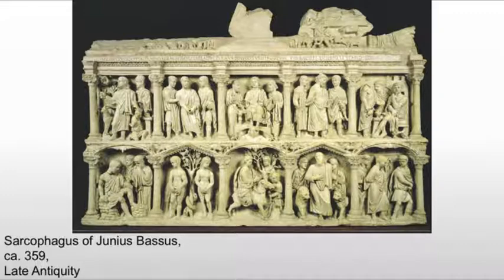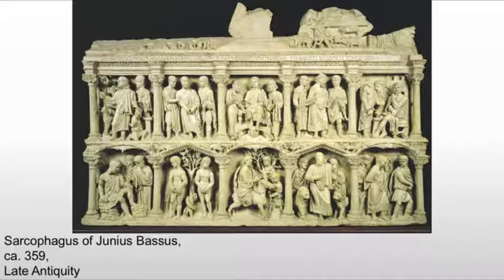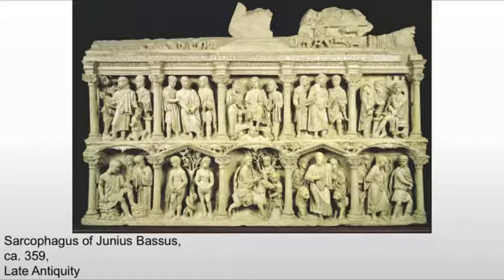We see Old and New Testament scenes making a dogmatic statement about Christianity. In the middle of the upper register, we see Jesus in majesty — Jesus on his throne in heaven — passing the law in the form of a scroll to St. Peter and St. Paul. There's an argument in early Christianity between Paul and James, around 70 CE during the time of the Jewish revolts, about whether Christianity would follow rabbinical law and ritual cleansing — what James wanted — or take the more spiritual path Paul advocated. Paul ultimately won.